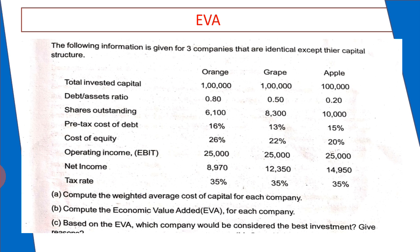Cost of equity, cost of debt, and taxation rate are all different, but EBIT will be the same, and the tax rate is also the same. We are asked to calculate the weighted average cost of capital for each company, calculate the economic value added for each company, and based on EVA, which company would you consider the best investment.